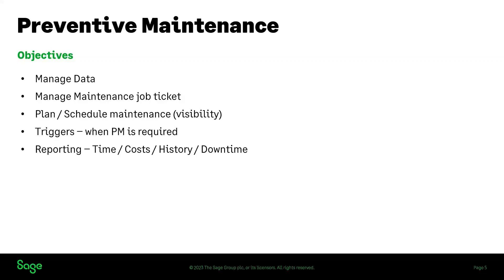Another objective is to plan and schedule maintenance — to provide visibility of what maintenance tasks are in process, what need to be planned, and what need to be scheduled. We also need triggers to provide visibility of when a task is to be performed — the change oil light. Reporting requirements: users need data available to report on time spent on maintenance tasks, costs associated with maintenance tasks, history of what was performed and when, and to capture key indicators such as downtime.